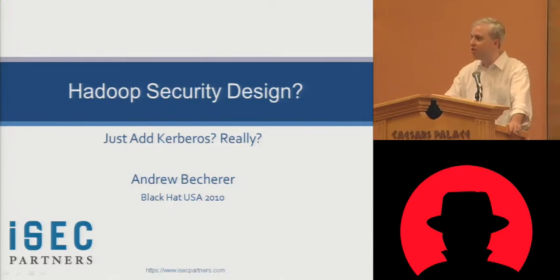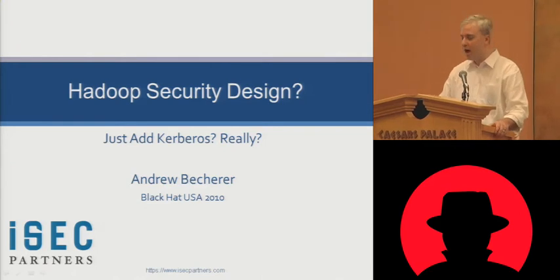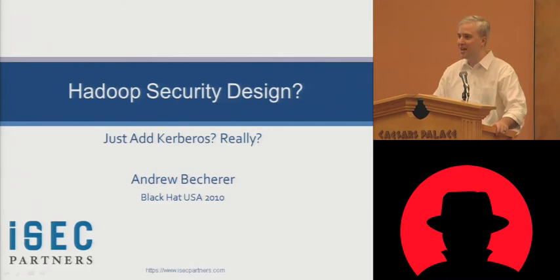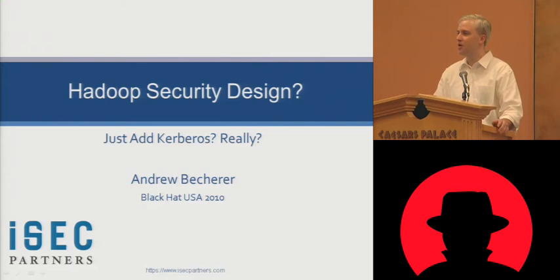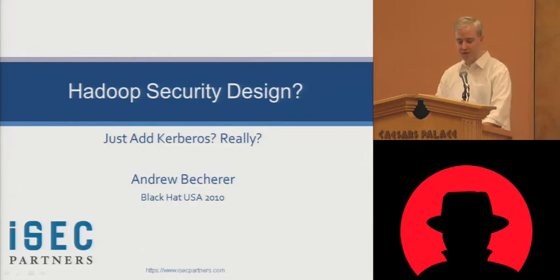Last year, along with researchers Alex Stamos and Nathan Wilcox, I presented a talk called 'Cloud Computing Models and Vulnerabilities: Raining on the Trendy New Parade.' In that talk, I focused on infrastructure-as-a-service cloud computing models and specifically threats to random number generation and the generation of entropy in infrastructure-as-a-service cloud computing providers.